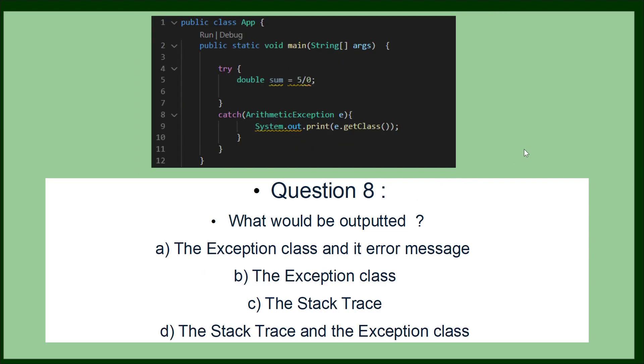Again, the eighth question is also about the try, catch, and the arithmetic exception object. It's asking what would be outputted. Because you can't divide by zero, this would be an arithmetic exception, and so you would print out whatever's in this statement. And it's also looking at what kind of methods an exception will have. And so you also have to understand what this e.getClass method does. And this only prints out the exception class and no other information.